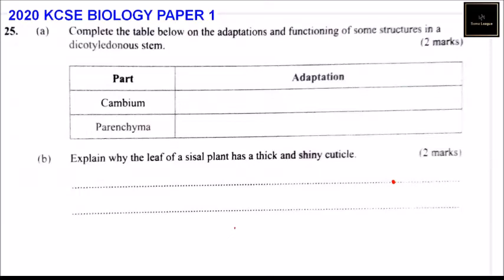This is question number 25, 2020 KCSE Biology Paper 1. We are told Part A: complete the table below on the adaptation and functioning of some structures in a dicotyledonous stem.